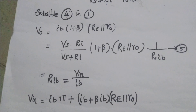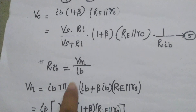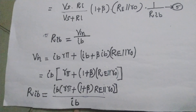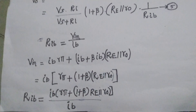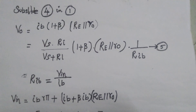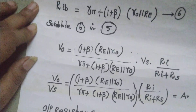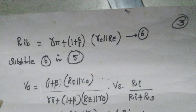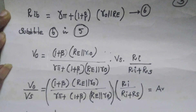From the VIN expression, take IB common and cancel it to get RIB — the input resistance seen at the base: RIB = Rπ + (1+β)·(RE ∥ r0). This is equation 6. Now substitute equation 6 into equation 5 (the expression for RI and VIN) to get the full numerical substitution.